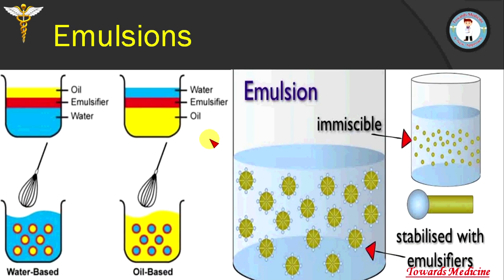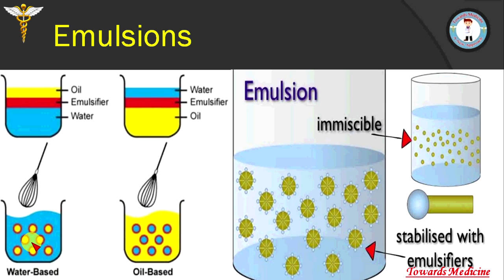Now if you add an emulsifying agent, these emulsifiers, which are mostly amphipathic in nature, surround the small oil droplets. If the droplets are dispersed in water, their hydrophilic region faces outward; if water is dispersed in oil, then the hydrophobic region faces outward. In this way they make it soluble.